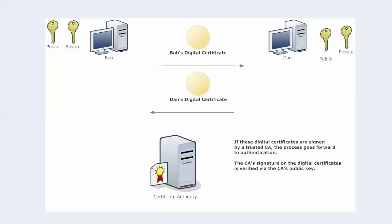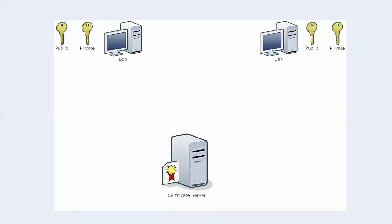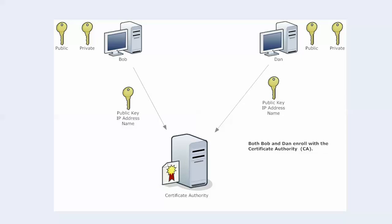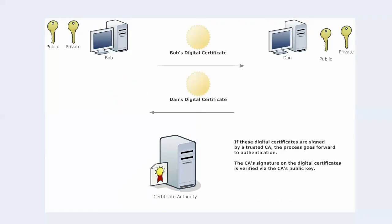There's a little bit of trusting going on here and a lot of verifying. So let's just walk through this process again very quickly. At the very beginning, Bob and Dan are going to send their public key, their FQDN, and their IP address to the CA — they're enrolling with the CA. If the CA likes what it sees, it will issue digital certificates back to Bob and Dan with PKI-related info, the URL of the revocation list, and some other information. Now they're going to start exchanging their digital certificates and move forward to authentication — we're going to cover that in the very next video.